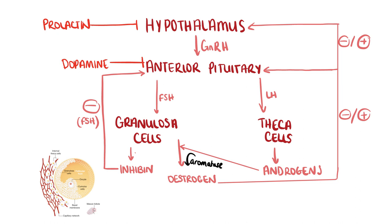The oocyte is released into the fallopian tube to allow for fertilisation to occur. Biological females are born with a fixed number of follicles. Once they reach the end of their reproductive lives, reduced follicle numbers means that circulating FSH and LH are less likely to stimulate a follicle and lead to follicular release of oestrogen and ovulation. No matter how high FSH and LH levels are, there's only a finite number of receptors which is reducing, so there is an increasing number of anovulatory cycles with increasing age. Decreasing levels of oestrogen mean there is less negative feedback on the HPO axis and levels of FSH and LH will be high. This forms the basis for blood tests we can do to confirm the diagnosis of menopause.